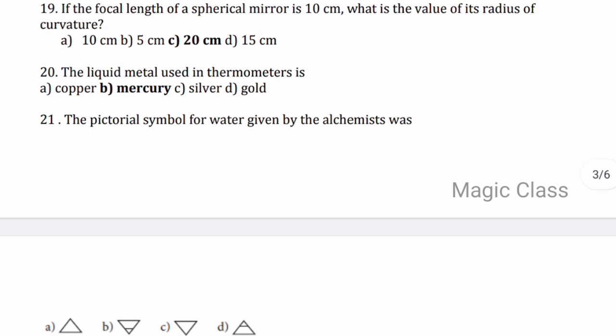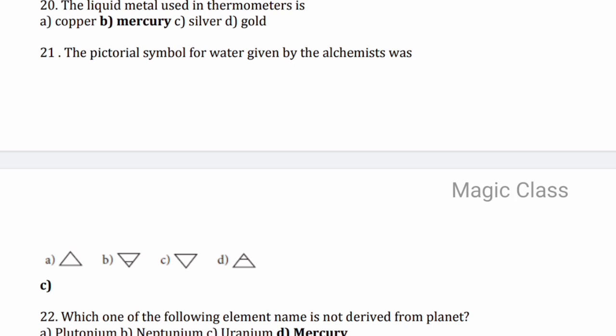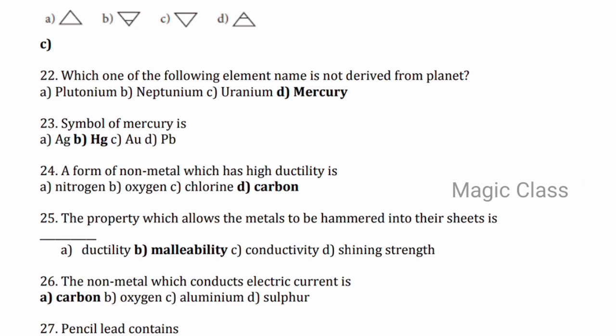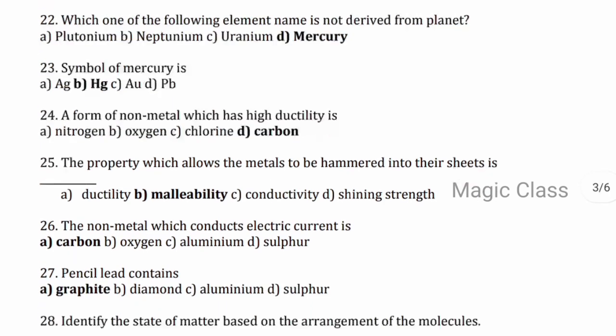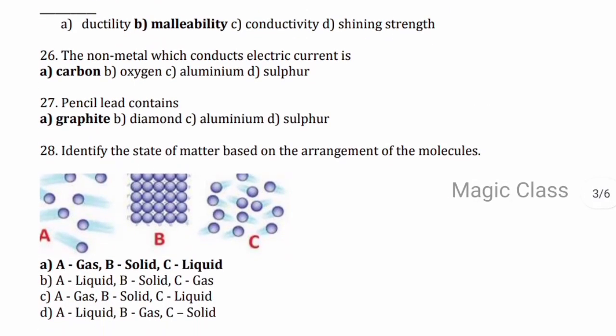Question 20 — the liquid metal used in a thermometer is mercury. Question 21 — the pictorial symbol for water given by the alchemist was option C: downward pointing triangle. Question 22 — which element name is not derived from a planet? Answer: mercury. Question 23 — the symbol of mercury is option B, Hg. Question 24 — a form of non-metal which has the highest ductility is carbon. Question 25 — the property which allows a metal to be hammered into sheets is called option B, malleability. Question 26 — the non-metal which conducts electric current is option A, carbon.